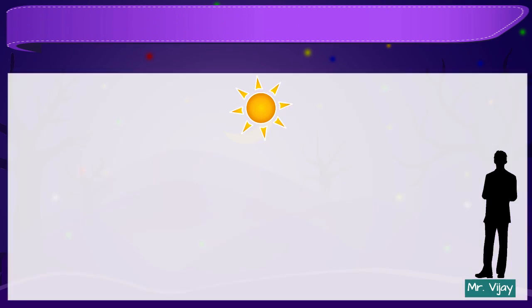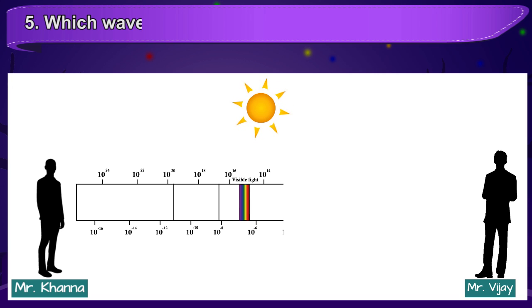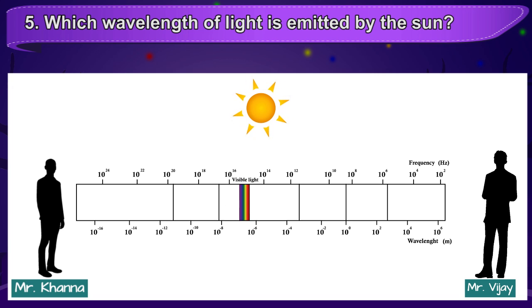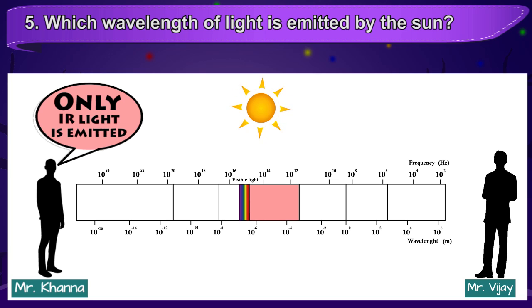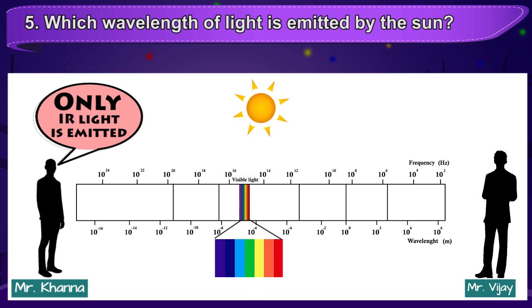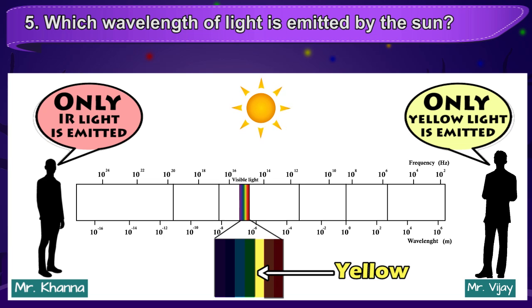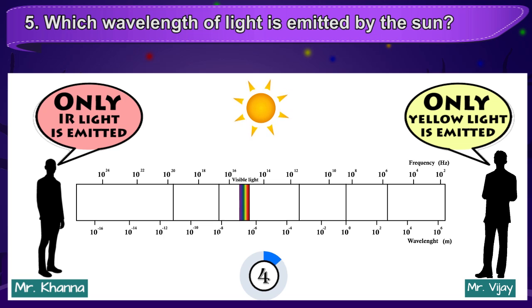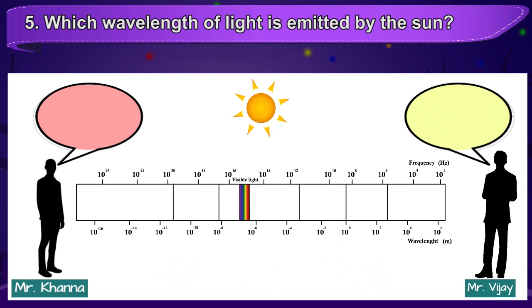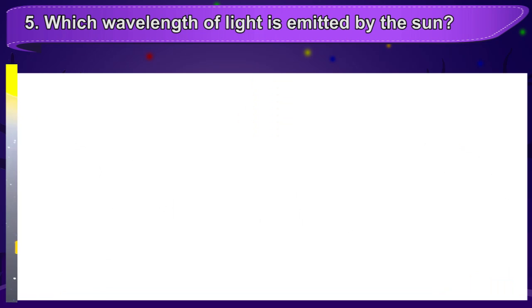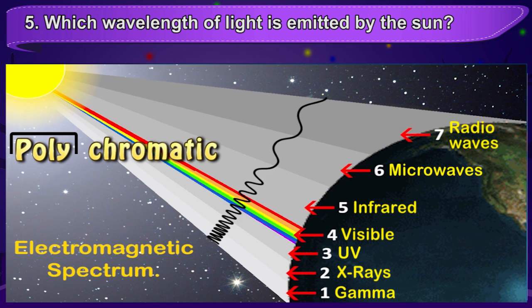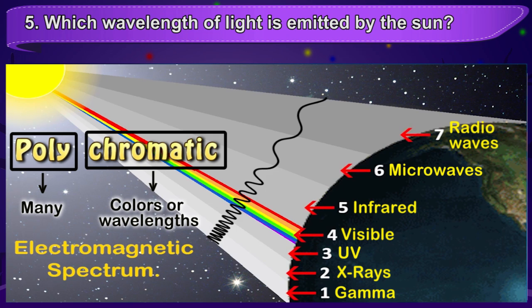A question is posed to Mr. Vijay and Mr. Khanna: which wavelength of light is emitted by the sun? Mr. Khanna says, as the sun is hot, it emits light only in the IR region. And Mr. Vijay says, as the sun appears yellowish, it emits light of the yellow wavelength. Both these theories are wrong. The sun is hot because of the various nuclear reactions taking place inside it, and as we've seen in the first session, the sun is a polychromatic source of light — poly means many — so the sun emits more than one wavelength. In fact, it emits all seven wavelengths in the electromagnetic spectrum.